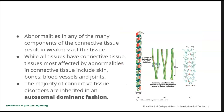Abnormalities in any of these many components can result in weakness of the tissue. While all tissues have connective tissue, the tissues most affected by abnormalities include the skin, bones, blood vessels, and joints. These are the ones most affected by weakness because of what they do.